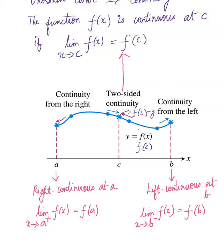The definition talks about interior points because at the end points A and B, it is not two-sided continuity but one-sided continuity. So if we want to talk about two-sided continuity, it is assured within A and B — the interior values of the interval A to B.